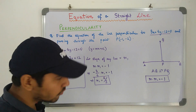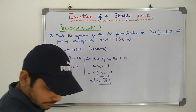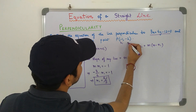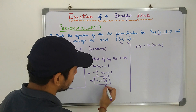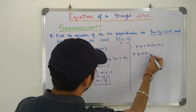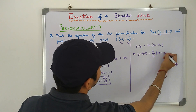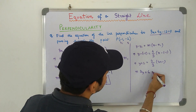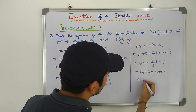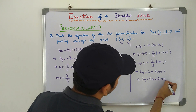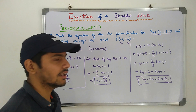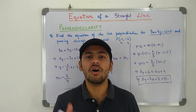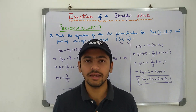Now we put this into the one-point form to get our equation. The formula is y minus y1 equals M(x minus x1), where x1 = −1, y1 = −2, and M = 4/3. So y minus (−2) equals (4/3) into x minus (−1), therefore 3y + 6 = 4x + 4, hence 3y − 4x + 2 = 0. This is the equation of the required line. In the next video, we will solve some advanced sums based on all the mixed topics of equation of a straight line. Till then, stay tuned, goodbye, take care and all the best.